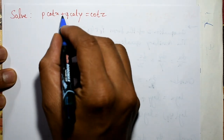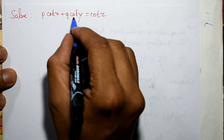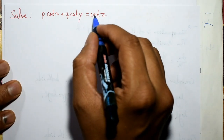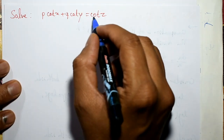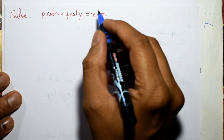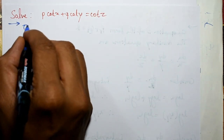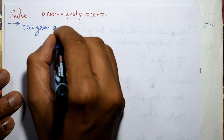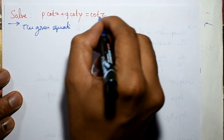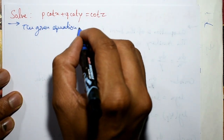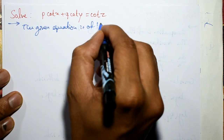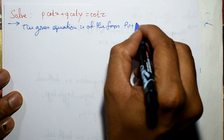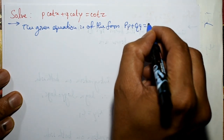Solve P·cot(x) + Q·cot(y) = cot(z). This example is very simple. Find the general solution of the Lagrange's linear PDE. The given equation is of the form Pp + Qq = R.